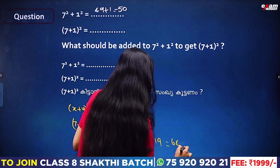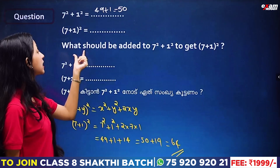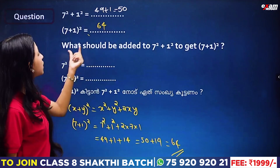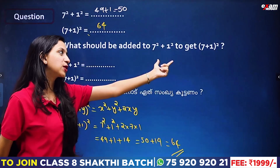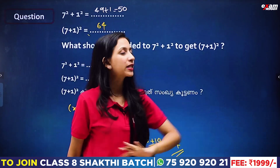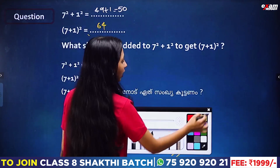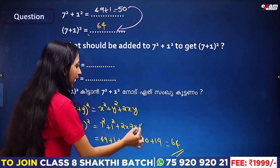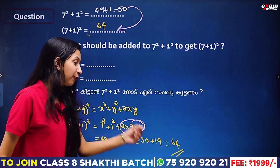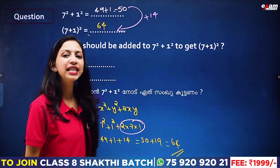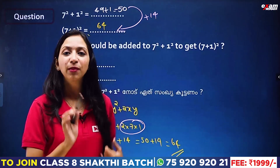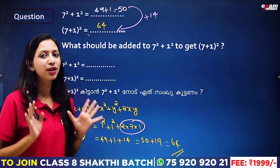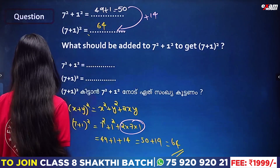We get 7 plus 1 whole square equals 64. What should we add to 7 squared plus 1 squared to get 7 plus 1 whole square? We need to add 2 into 7, which is 14. We apply the identity: plus 14 gives us the answer.